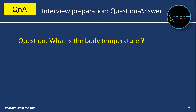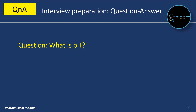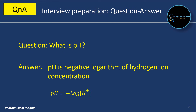1st question: What is the body temperature? Body temperature is 37 degrees Celsius. 2nd question: What is pH? pH is the negative logarithm of hydrogen ion concentration, expressed as pH = -log[H+].